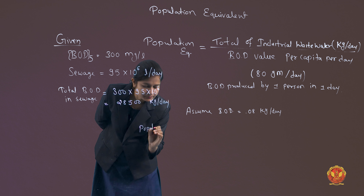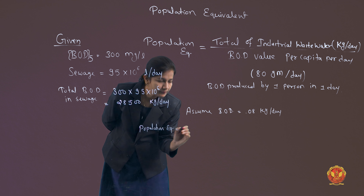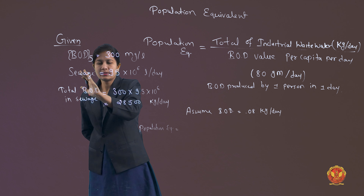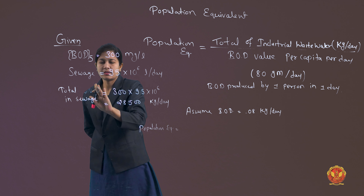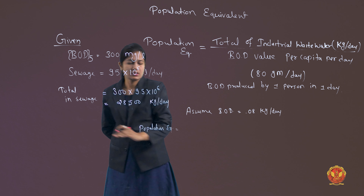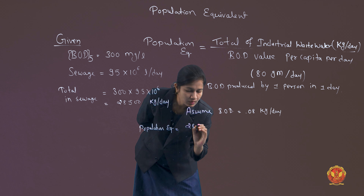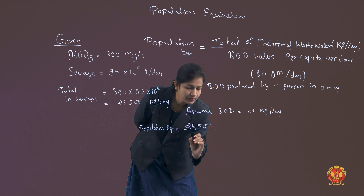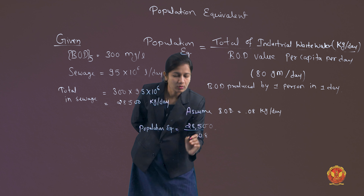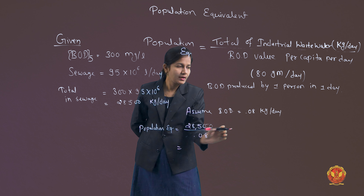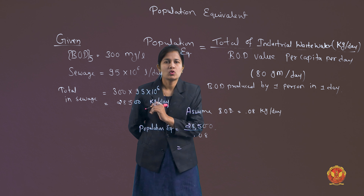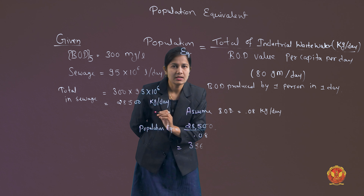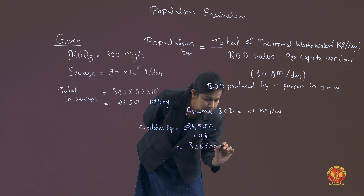Now, we apply the population equivalent formula. Population equivalent equals total BOD in sewage divided by BOD produced per person per day. That is 28,500 kilograms per day divided by 0.08 kilograms per day. The answer is 356,250 persons.